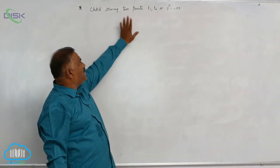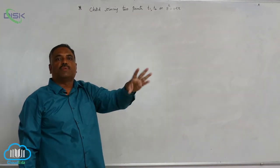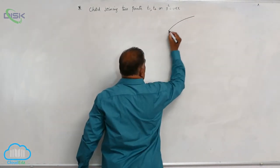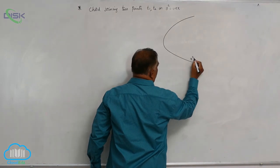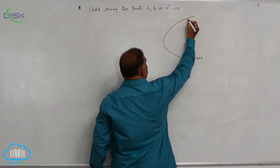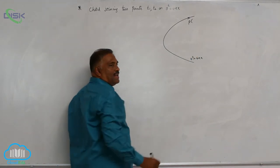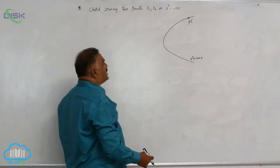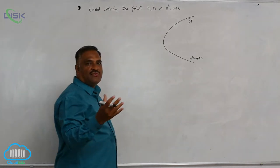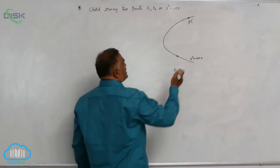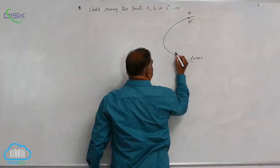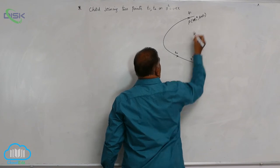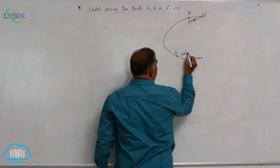Let us discuss the chord joining two points t1 and t2 on the parabola y² = 4ax. If you take this parabola, any point can be taken as (at², 2at). To distinguish between two points, let us say this is t1 and this is t2. So this point will become (at1², 2at1) and this is (at2², 2at2).